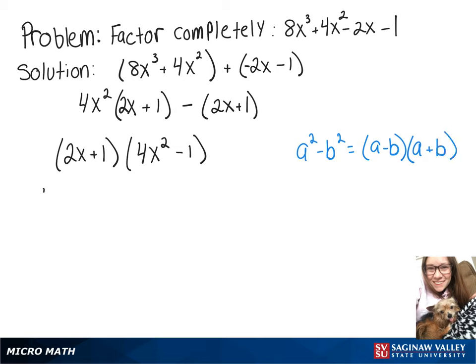So we have our 2x + 1, and then when we factor our 4x² - 1, we'll have (2x + 1)(2x - 1).